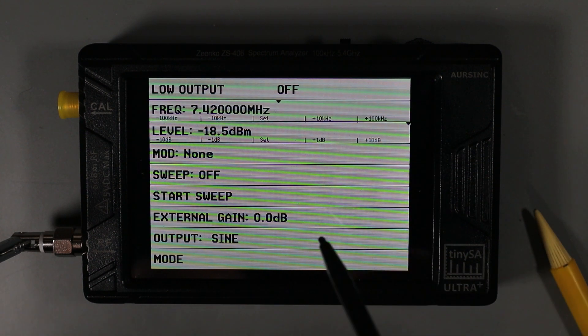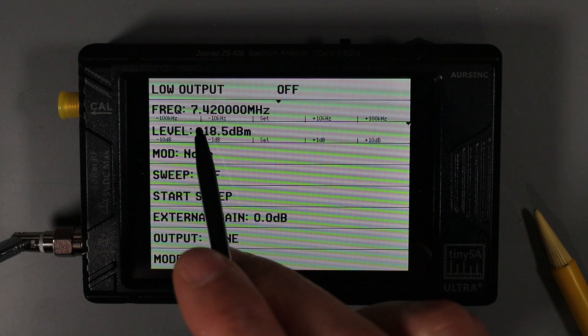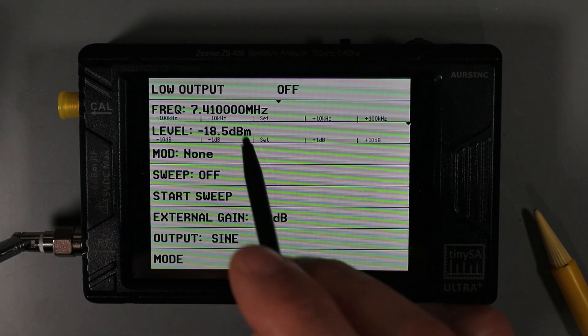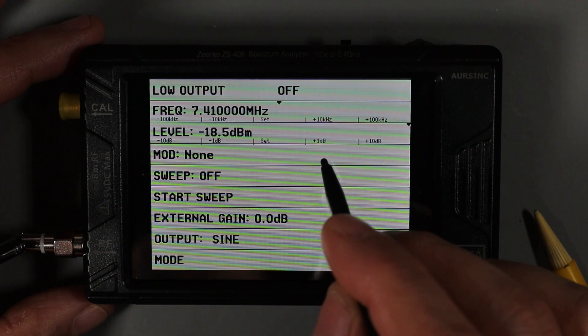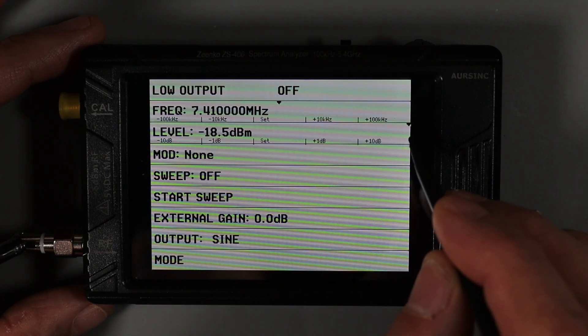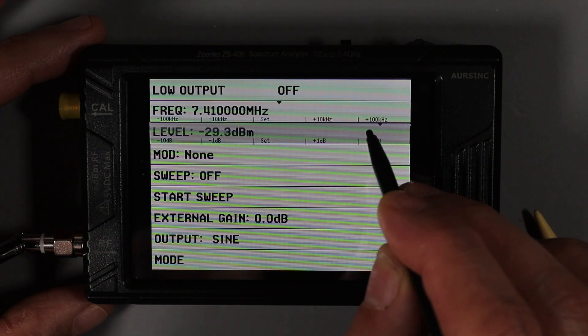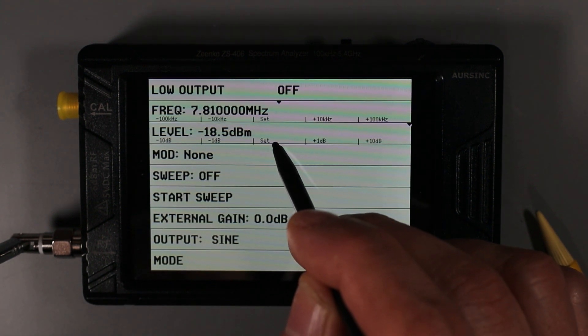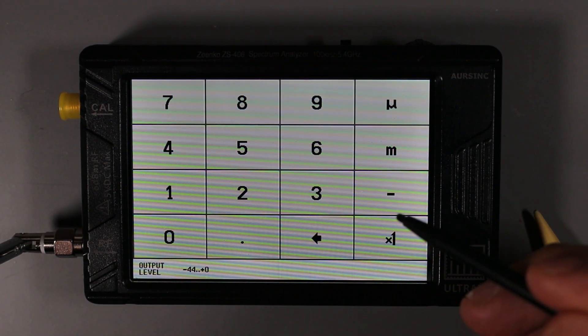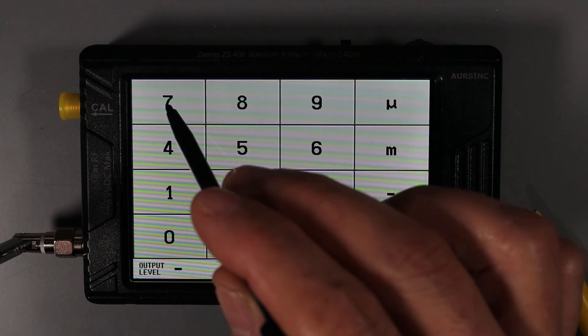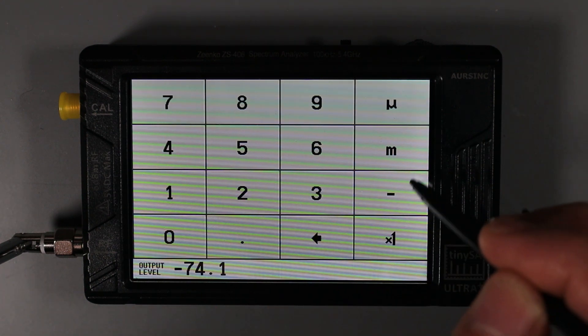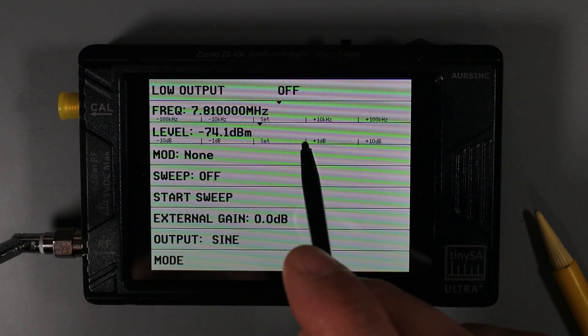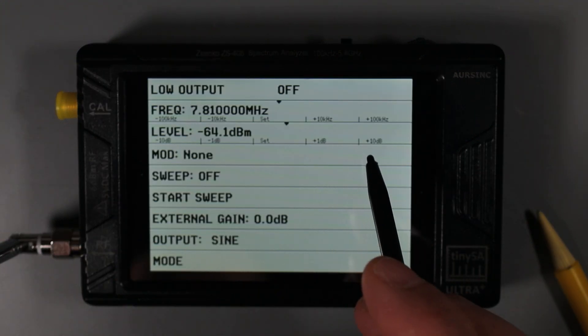I can also increment or decrement the frequency by clicking on these sections in the field. For example, if I click plus 10k, you can see it goes up to 7.42 megahertz. And if I click the minus k, it goes back down. We can change the signal level the same way we did with the frequency by clicking the slider and dragging it around. And just like with the frequency, we can enter a direct value by clicking in the center and entering in that value.